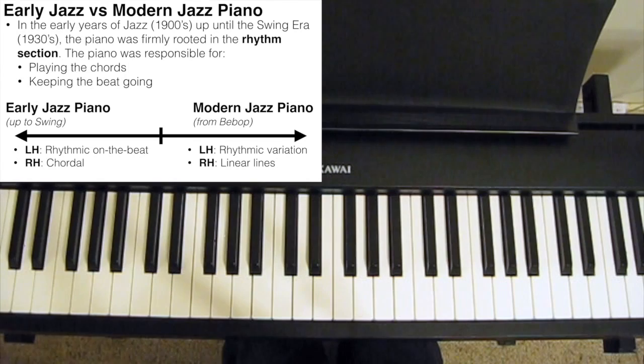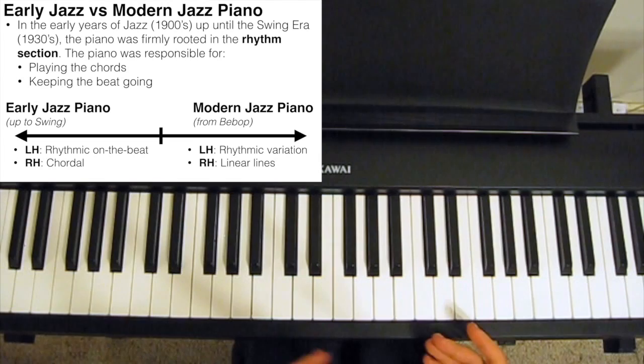Hi, so in the early years of jazz, up until and including the swing era, the piano was firmly rooted in the rhythm section of the band. This meant it had two key functions or roles: to play the chords and to keep the beat going.